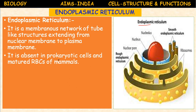The endoplasmic reticulum is absent in prokaryotic cells, as membrane-bounded organelles are absent there. It is present in eukaryotic cells only. However, mature red blood cells of mammals also lack endoplasmic reticulum.